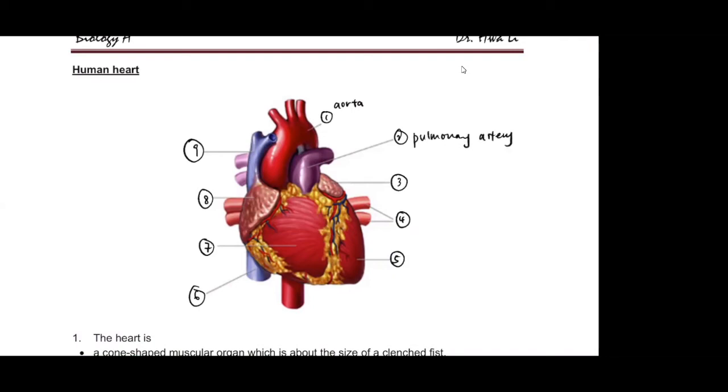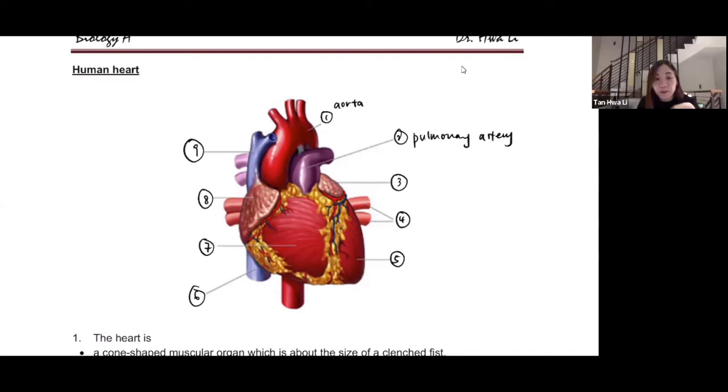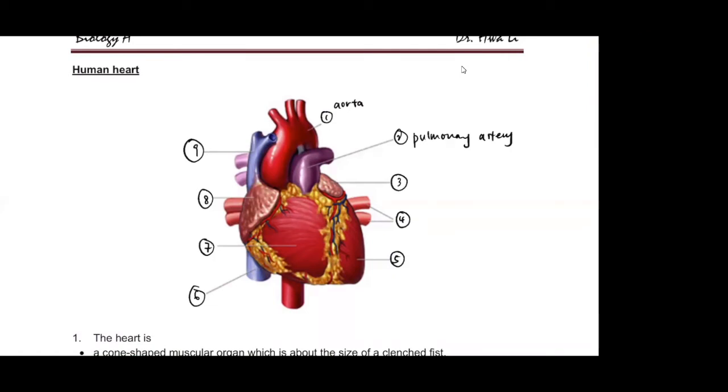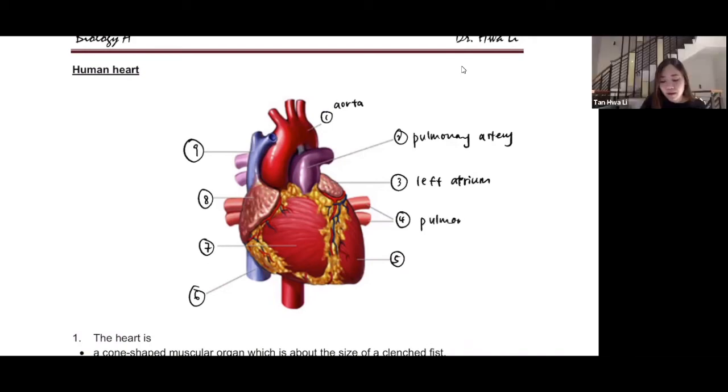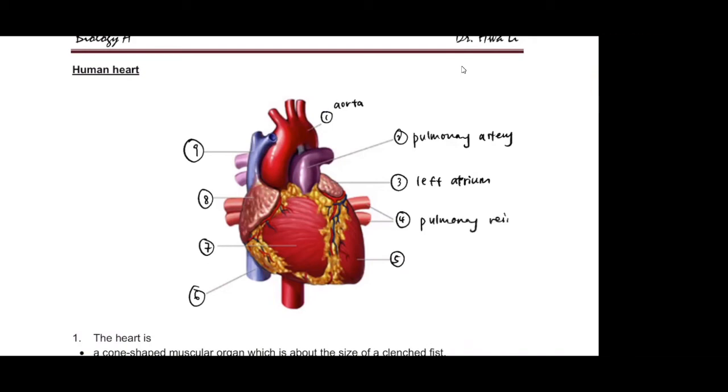I don't know what's number three. Number four is pulmonary vein. And then five is left ventricle. Yes, good.